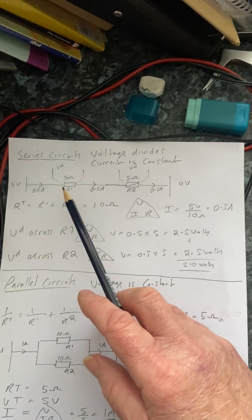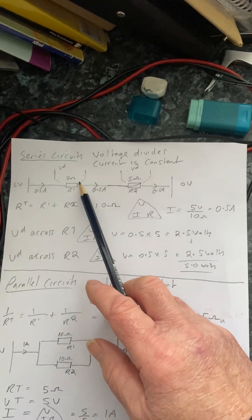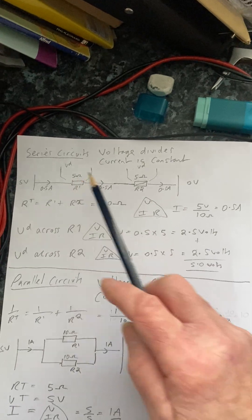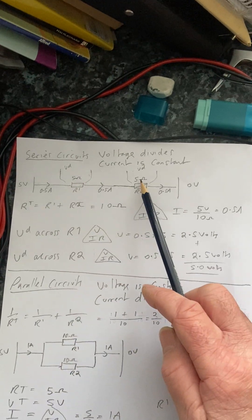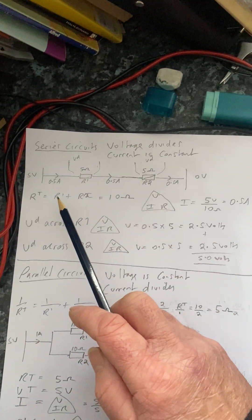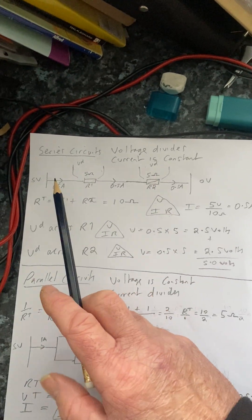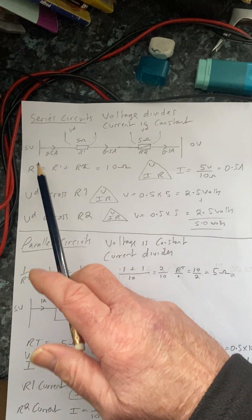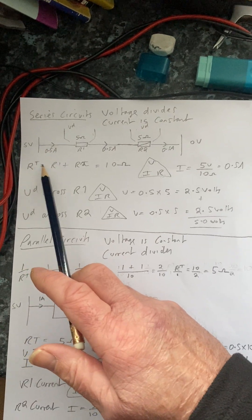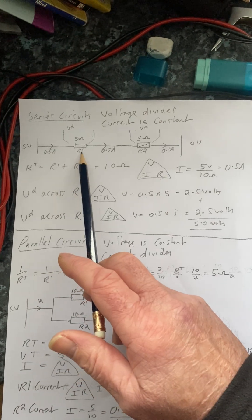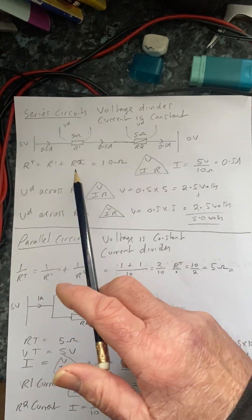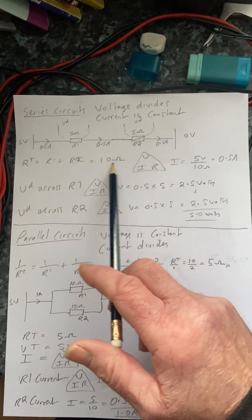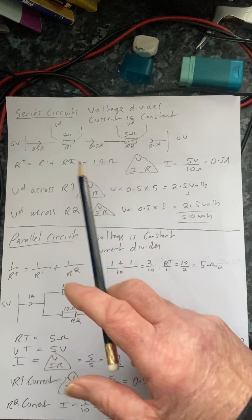What we've got here is a resistor and a relay. The resistor is 5 ohms and the relay coil is 5 ohms. To work out the total resistance: RT = R1 + R2, so 5 ohms plus 5 ohms equals 10 ohms total resistance.